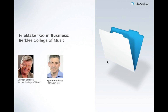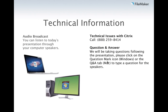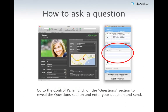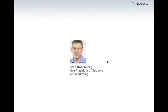Before we get started, I'd like to cover just a few housekeeping items. We strongly recommend that you participate in this web seminar with at least a broadband connection. If you have any problems or require online assistance at any time, you can contact Citrix Technical Support at 888-259-8414. I'd like to cover how you can ask questions today — go to your control panel, choose the questions area, enter your question, and hit submit, and we will cover as many questions as time will allow at the end of our presentation. With that, I'd like to introduce Ryan Rosenberg, Vice President of Marketing and Services at FileMaker, who will briefly talk about the FileMaker product line.